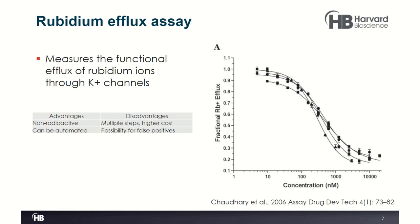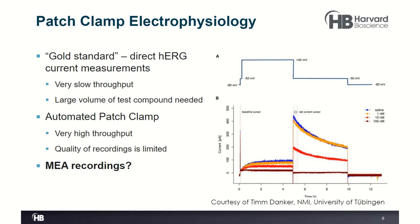Another very popular technique is to measure rubidium efflux. This is a non-radioactive assay that measures the functional efflux of rubidium ions through potassium channels, ideally performed on cells that express the hERG channel. Advantages include the ability to automate the process. However, there are multiple steps involved, higher costs per data point, and potential for false positives using this kind of assay.